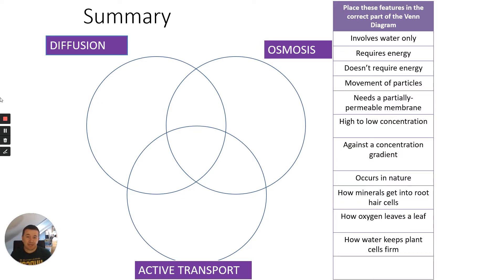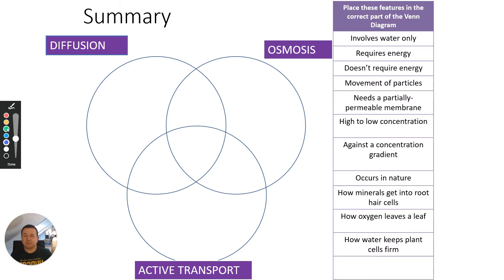What I've got here is a Venn diagram with three circles: one for diffusion, one for osmosis, and one for active transport, and you can see that they're overlapping. If a feature is in the diffusion-only section, it belongs to diffusion only. If it's in the osmosis-only section, it belongs to osmosis only. If it's in the overlapping part between diffusion and osmosis, it's shared by both. If it's right in the middle, it's found in all three: diffusion, osmosis, and active transport.